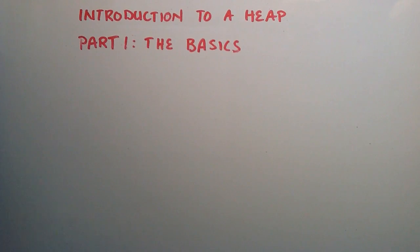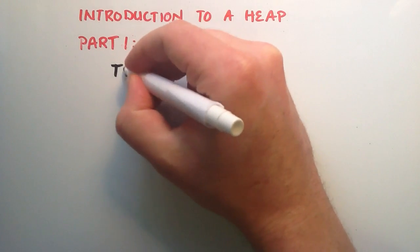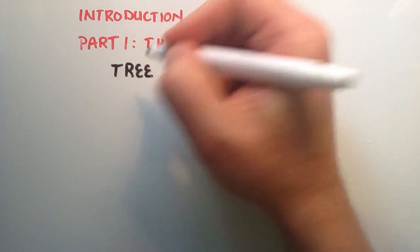So the two basic ways to implement a heap, we can implement a heap as a tree or as an array.